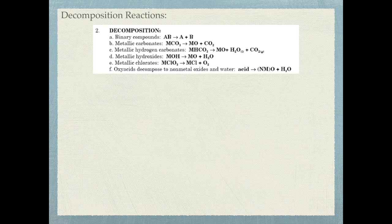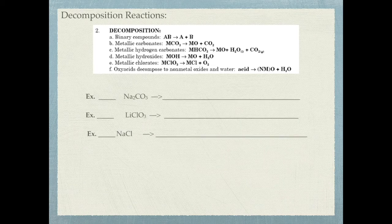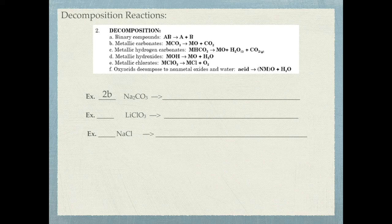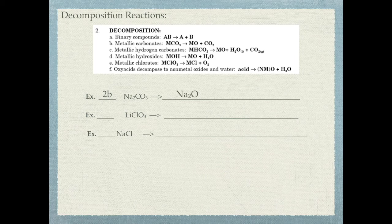For the first decomposition example, Na2CO3 is a metal with carbonate, so it's a 2B reaction — it forms a metal oxide and carbon dioxide. The metal is Na with a plus charge, and oxygen has a 2 minus charge, so crossing charges gives Na2O. Writing Na2O plus CO2, checking the equation — it's already balanced.